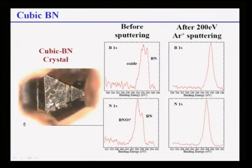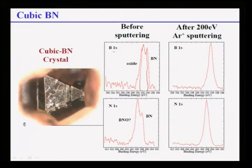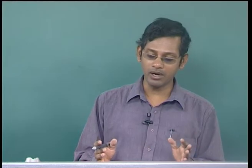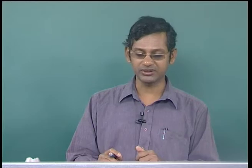In cubic boron nitride (a very hard material), looking at boron 1s before and after ion sputtering: before sputtering, both a BN peak and a boron oxide peak are visible. After sputtering, only the boron nitride peak remains clearly. This demonstrates that sputtering removes the surface oxide layer. The chemical shift of the boron 1s peak position is a function of whether oxygen is present on the surface (forming boron oxide B2O3) or not. This is why sputtering is used to clean surfaces before XPS analysis.